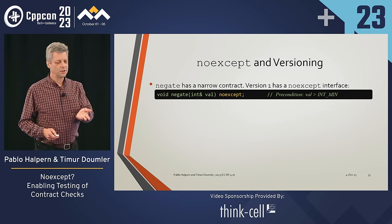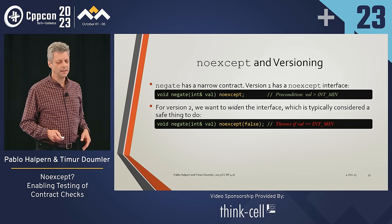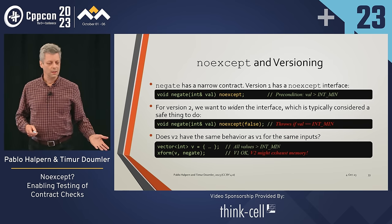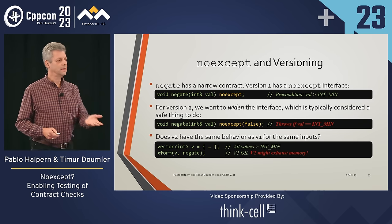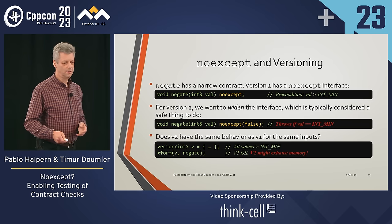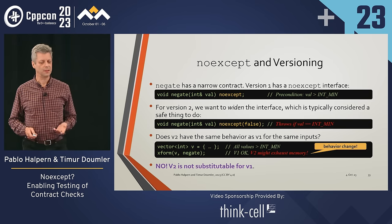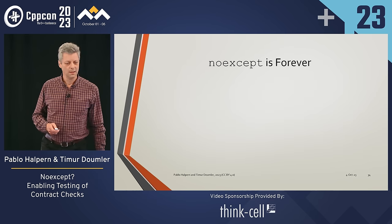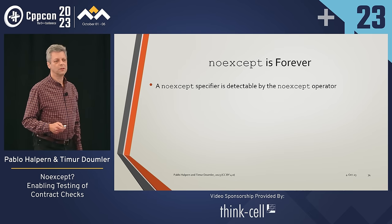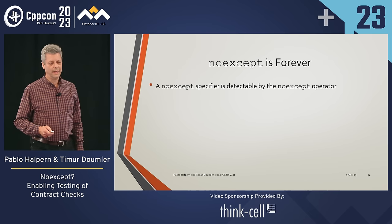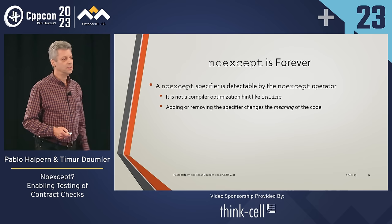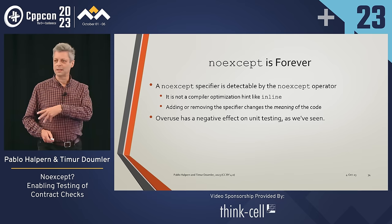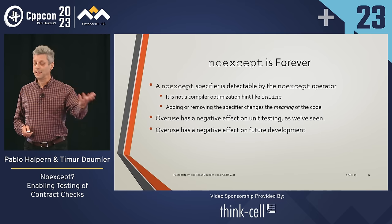This impacts versioning: if we have a function with noexcept and later decide to widen the contract — which is typically a safe thing to do — what happens with new inputs? The new version is not substitutable for the old because we have a change of behavior. Before, we were guaranteed not to exhaust memory; now we might. So if you put a noexcept specifier on something, it's there forever. It's not a compiler optimization — it's used and visible to the code. You can't just add and remove it later.